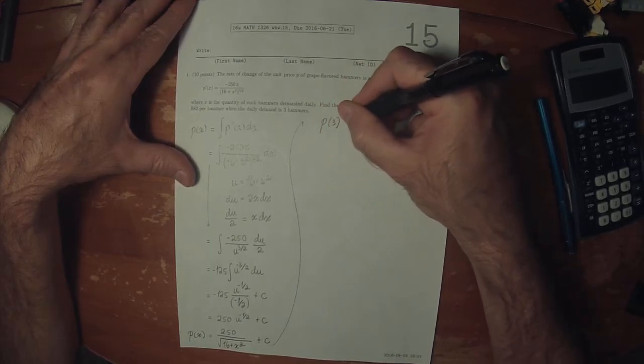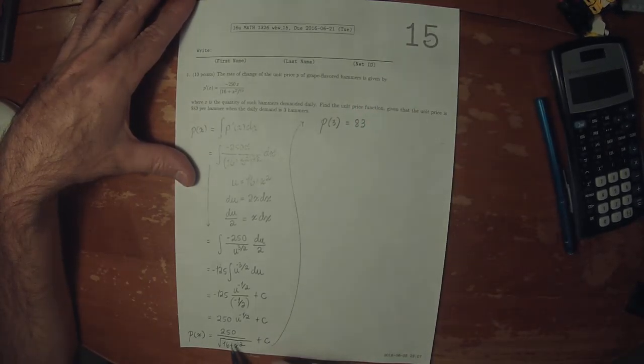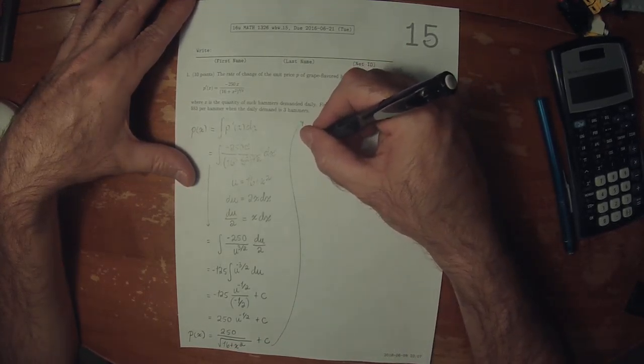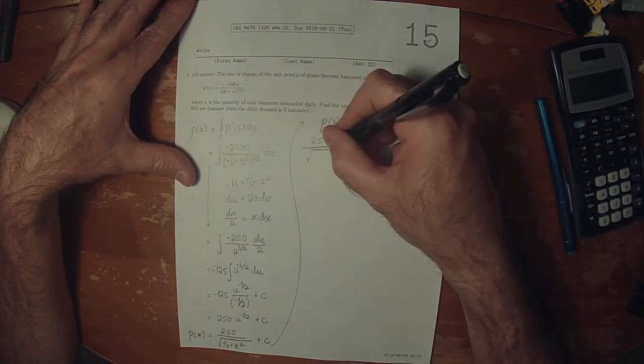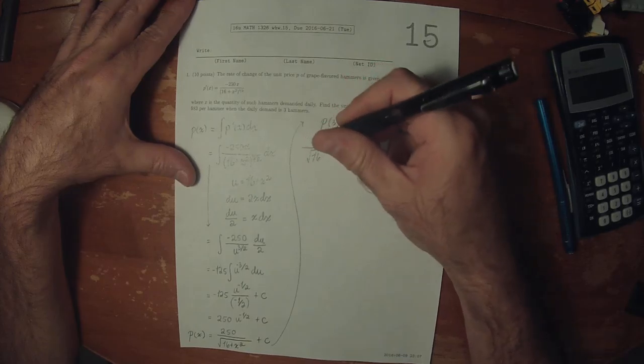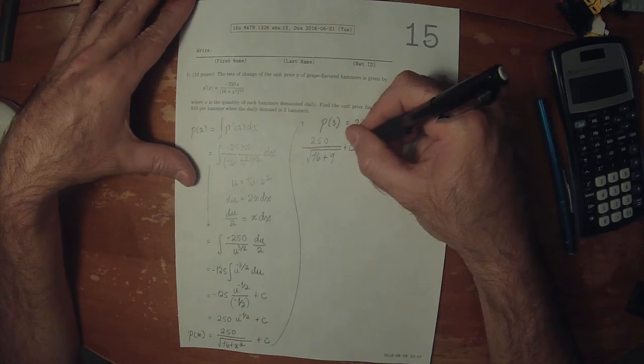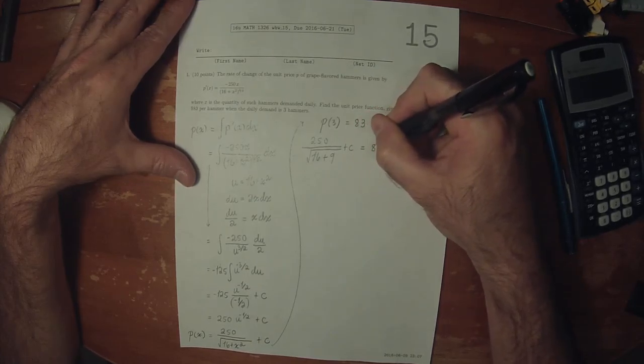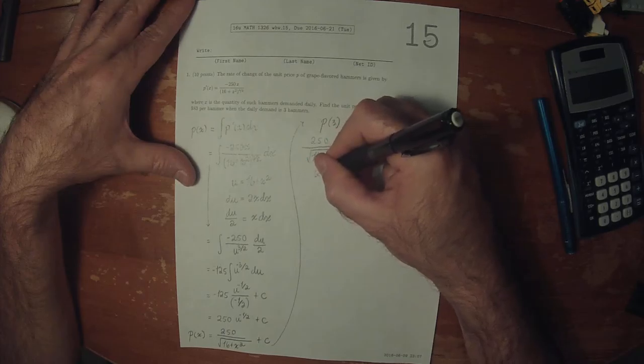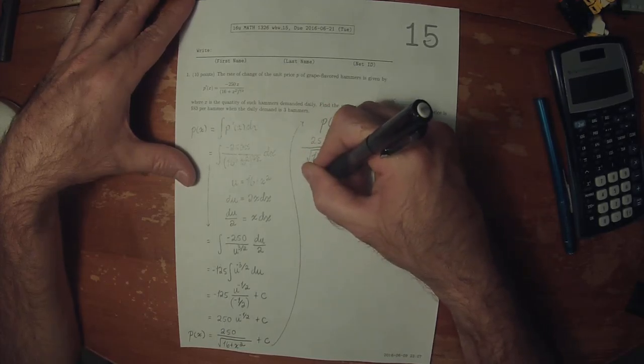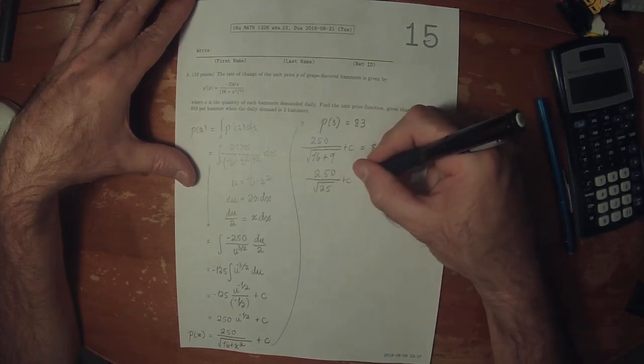So it is known that p of 3 is 83. Let's plug that in. 250 divided by square root of 16 plus 3 squared is 9, plus c is 83. So 250 over square root of 25 plus c is 83.